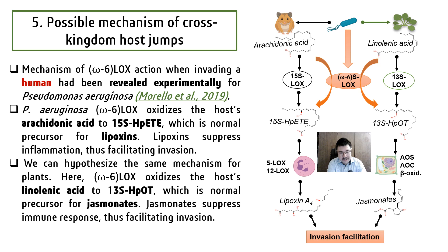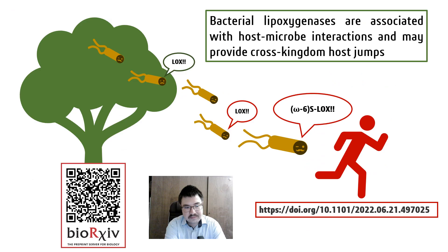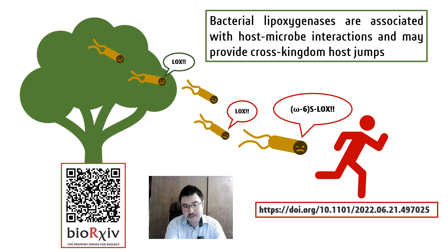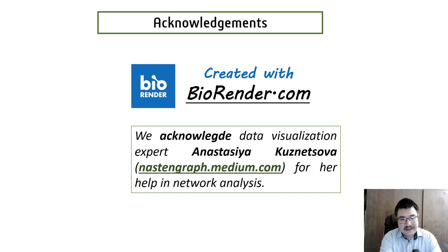This is the possible explanation of the associations we have observed in our data. Even if our explanation is not confirmed in further experimental studies, we have found that omega-6 lipoxygenase activity in bacteria is associated with plant-to-human or human-to-plant host jumps. This needs special attention from our medical colleagues in the context of possible emerging pathogens and new outbreaks in hospitals and intensive care units. For more information, please read our preprint on bioRxiv. I acknowledge our data validation advisor Anastasia Kuznetsova for her help in network analysis.